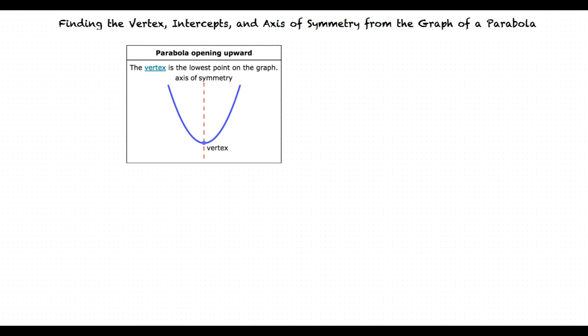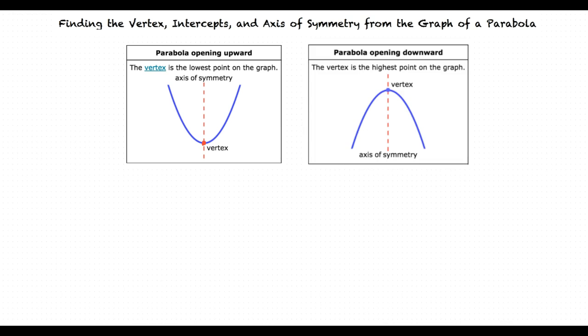Before we start, let's review a couple properties of parabolas that will help us in solving problems relating to this topic. When a parabola is opening upward, the vertex is the lowest point or minimum of the graph, whereas when a parabola is opening downwards, the vertex is the highest point or the maximum of the graph.